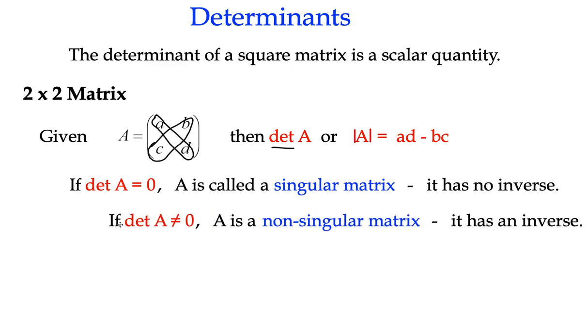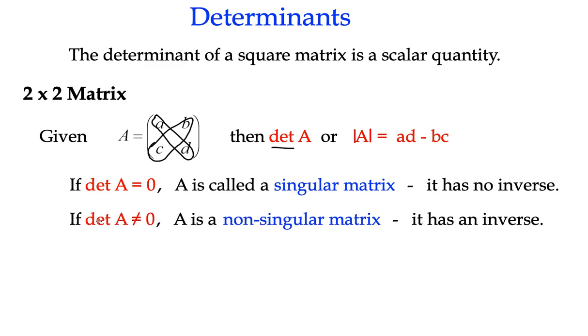And conversely, if the determinant is not 0, whether it's positive or whether it's negative, we can go on and know that it has an inverse. So the first thing we can determine from this number is whether or not a matrix has an inverse.